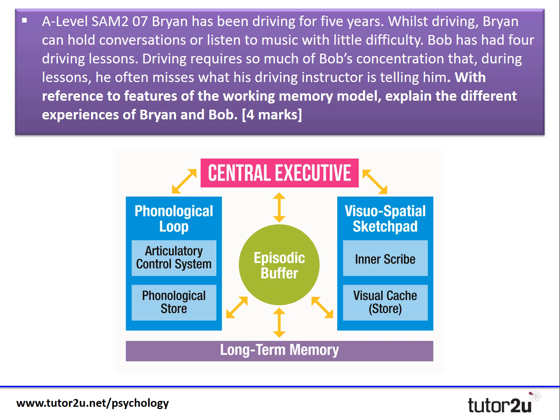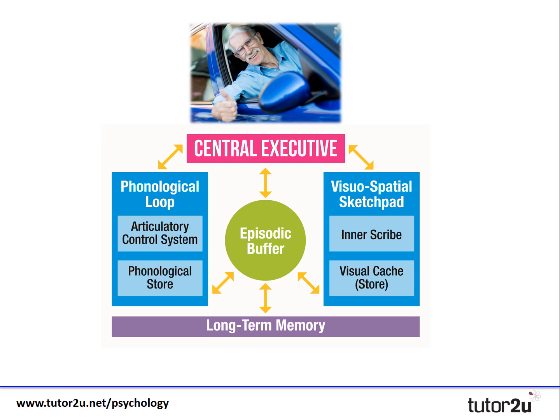So here's a diagram of the working memory model on screen now. In order to answer this question, it's useful to consider an abstract example. So for the purpose of this example, let's imagine — and this is meant to be Brian on screen — that we have 10 attentional resources in our short-term memory. Please note this is a completely made up example, but I'm using it to really illustrate the question and help us arrive at a logical answer.